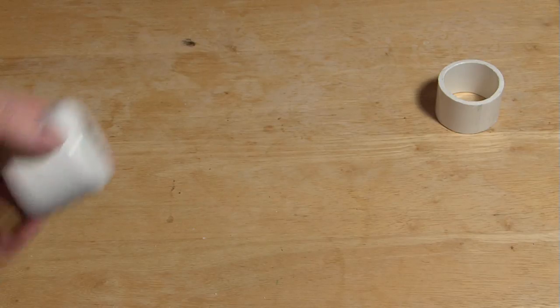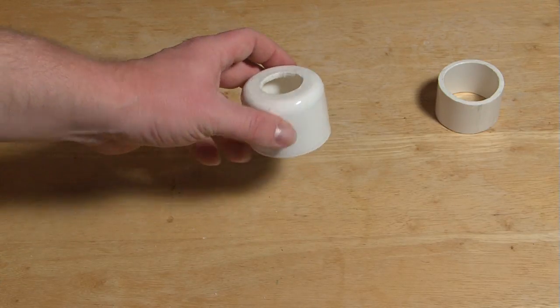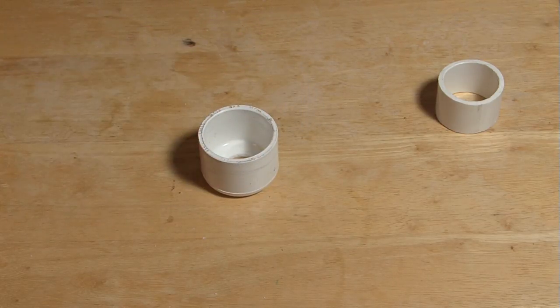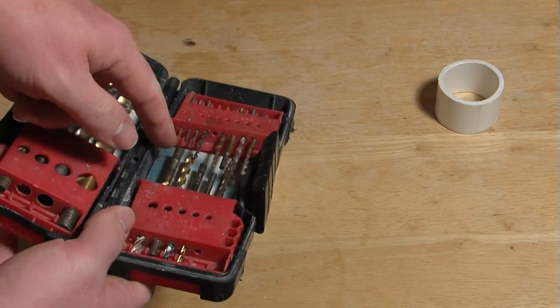Now the difficult part. We need to cut a hole inside this cap. The best way to do this is to drill a small pilot hole with one of the small drill bits and then enlarge the hole.